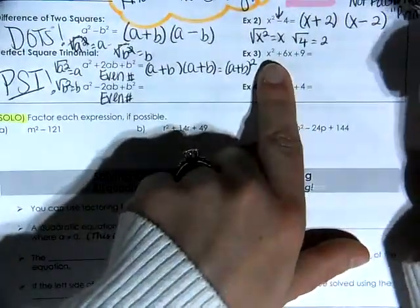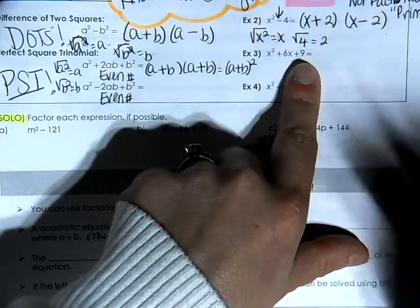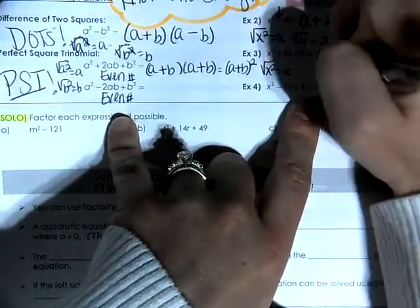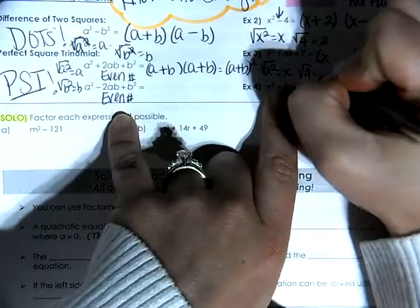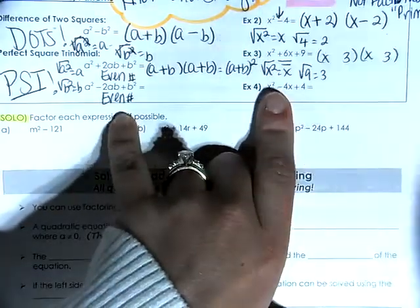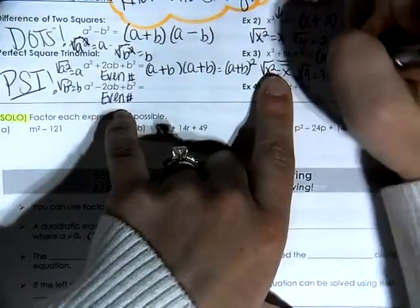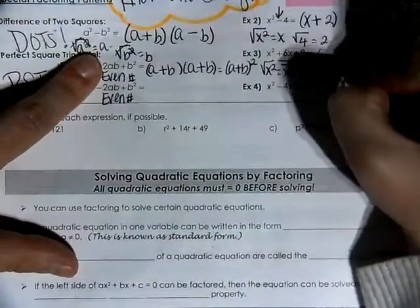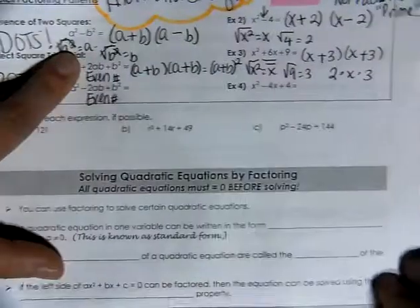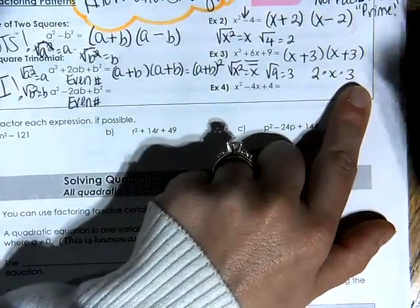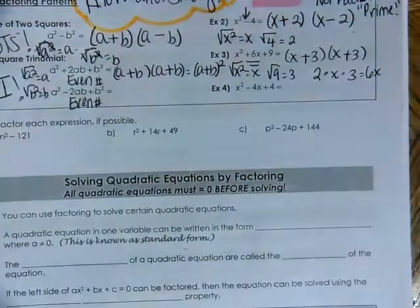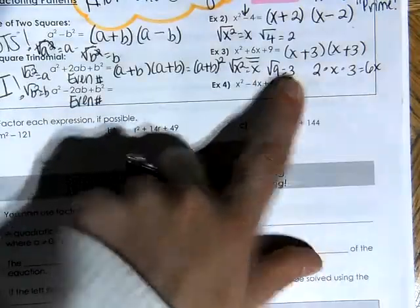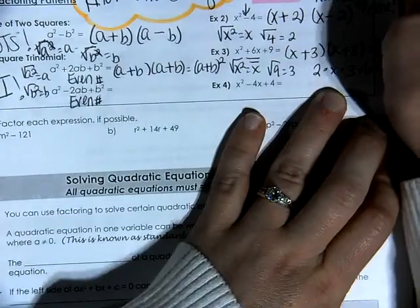With all plus signs in the middle, we have plus signs in between. I take the square root of a squared, which is a, and the square root of b squared, which is b. For our example, the square root of x squared is x, so I have an x and an x. The square root of 9 is 3, so I have a 3 and a 3. Because my middle term is an even positive number, I have a plus and a plus. What is 2 times x times 3? That's 6x — that's where the even middle term comes from.